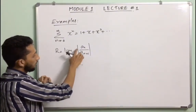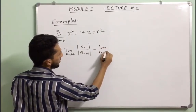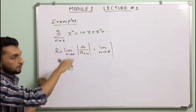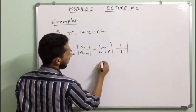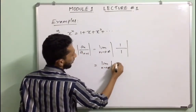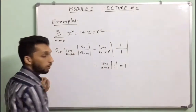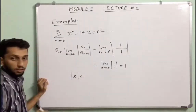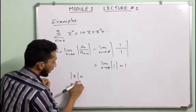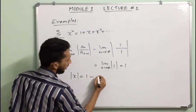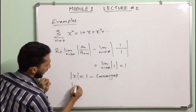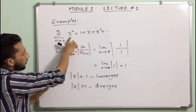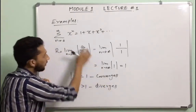For the third example, consider summation of xⁿ, which is 1 plus x plus x² plus etc. The radius of convergence R equals limit n tends to infinity of |aₙ / aₙ₊₁|. Here the sequence aₙ is 1, 1, 1, 1, … so the limit is |1/1| = 1. Thus R = 1. When |x| < 1, the power series converges and we get a finite sum. When |x| > 1, the series diverges.